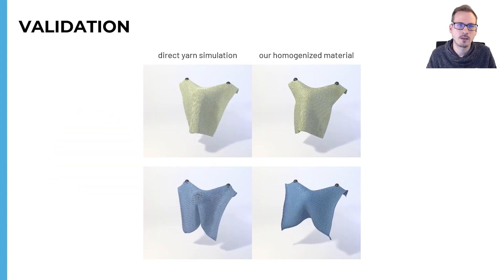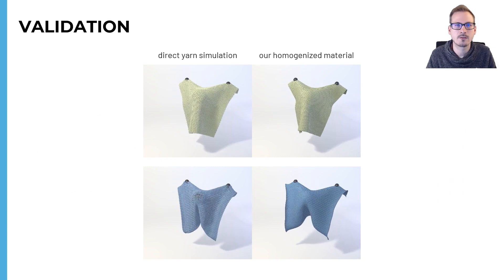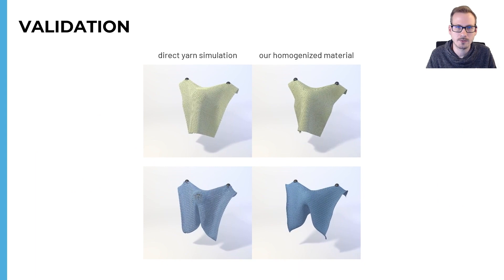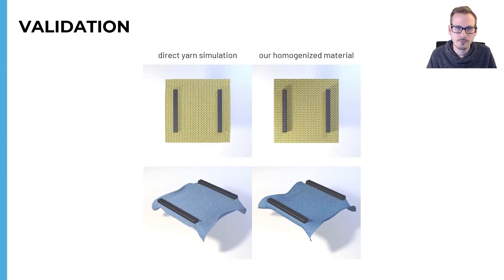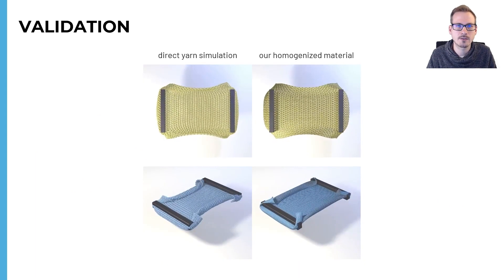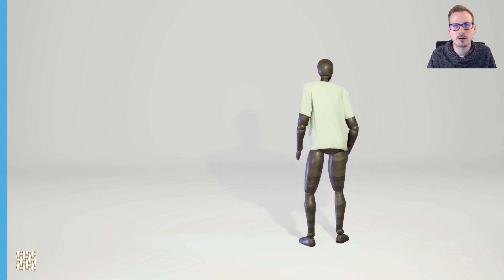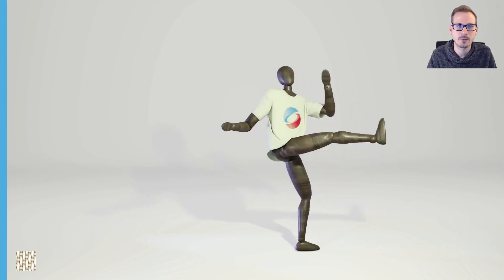Compared to direct yarn simulation on the left, our homogenized materials on the right are able to reproduce the distinct draped shapes of different fabrics. They also match interesting effects such as area preservation or even curling. Our method now easily scales these yarn models to large garments, where direct yarn simulation is too expensive.